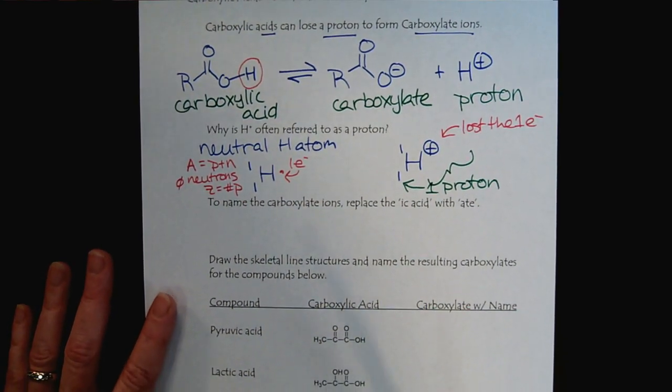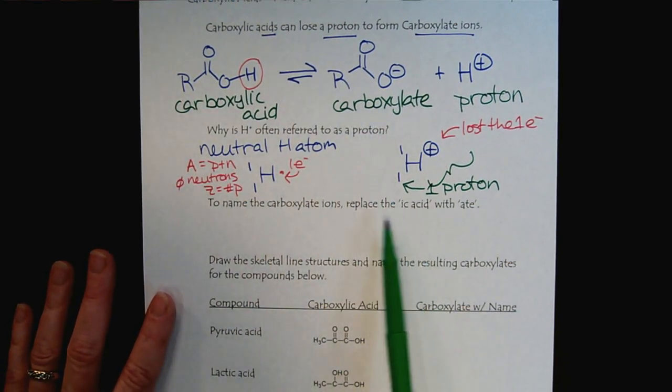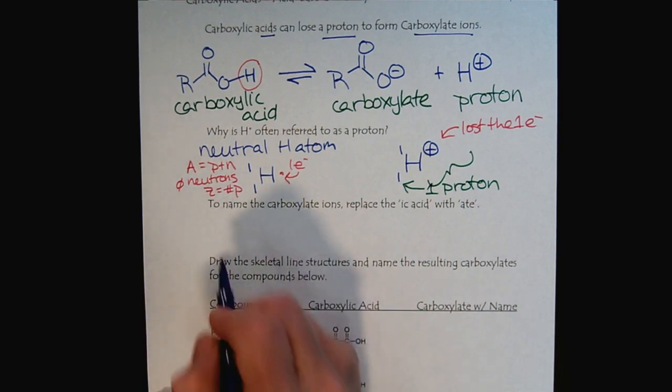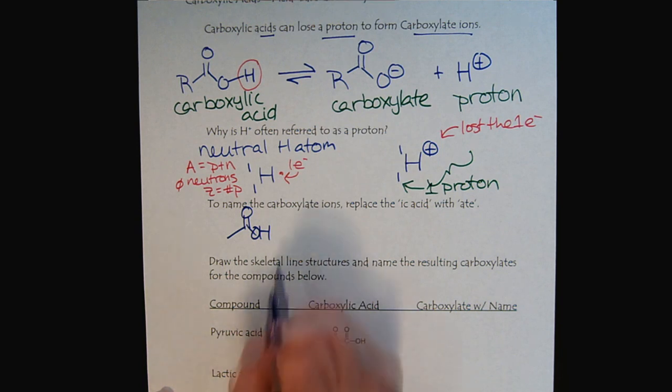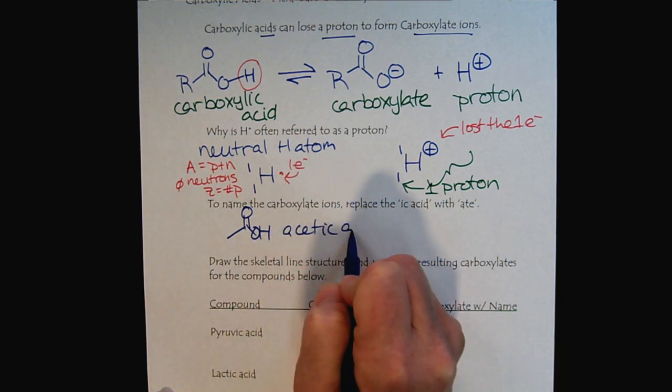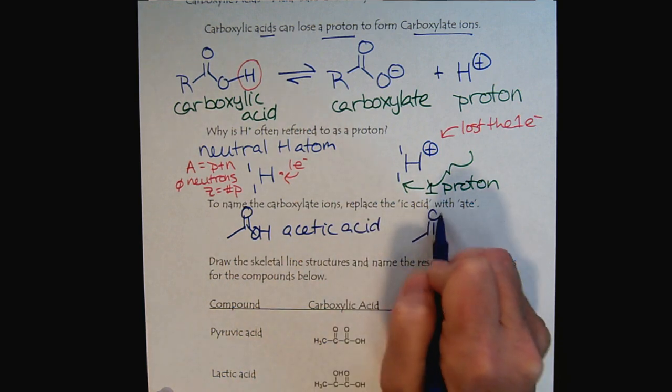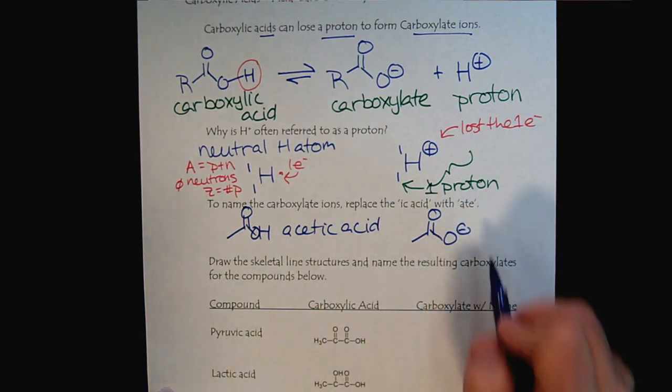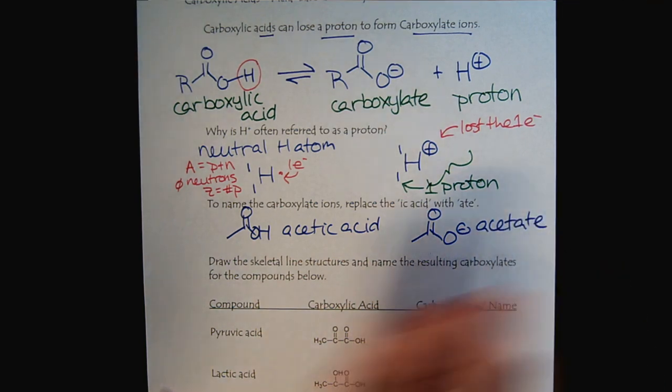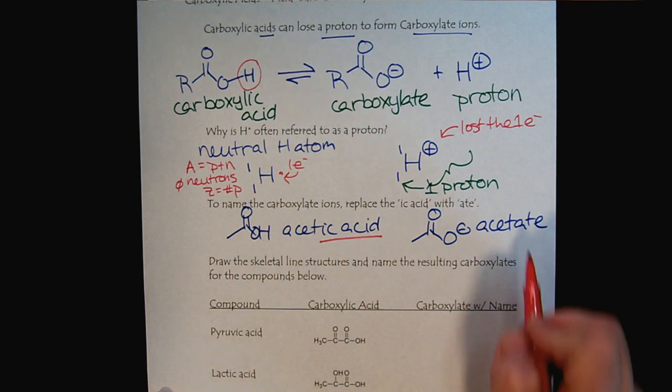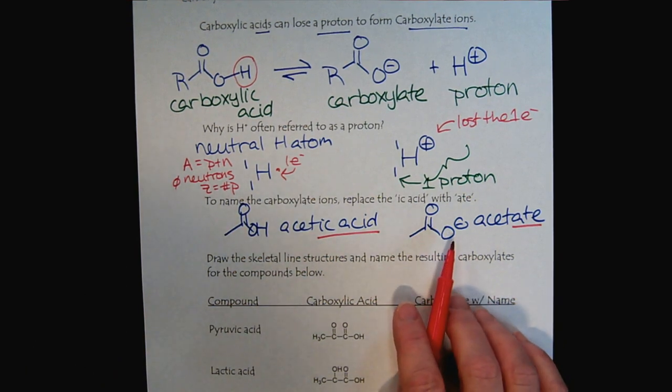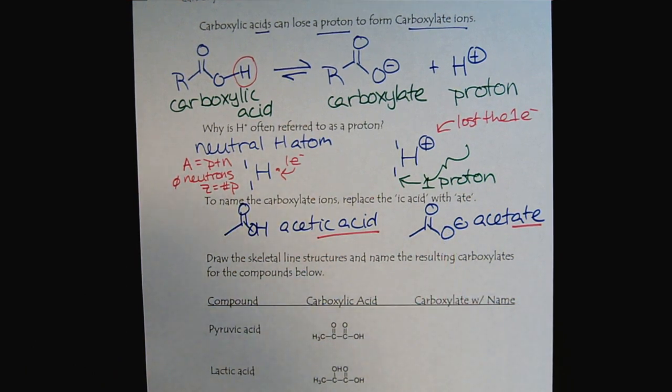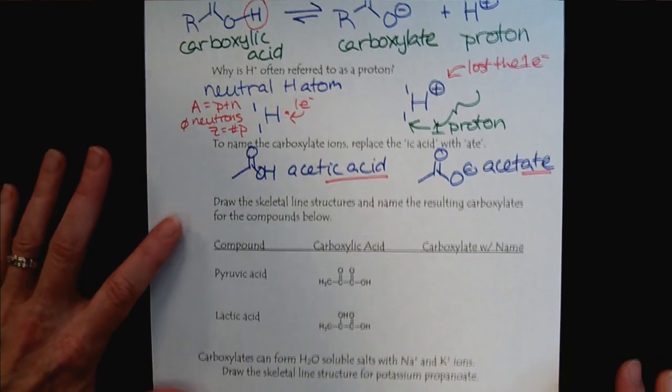Linguistically, when we're talking about the carboxylate ions, it's really as simple as replacing the ick acid with ate. So for example, if we had a very common carboxylic acid, this would be acetic acid. And then we would look at this carboxylate, that would be acetate. So we see here that the ick acid was replaced with ate. So you already know how to name carboxylic acids, so you'll always be able to name the carboxylate.